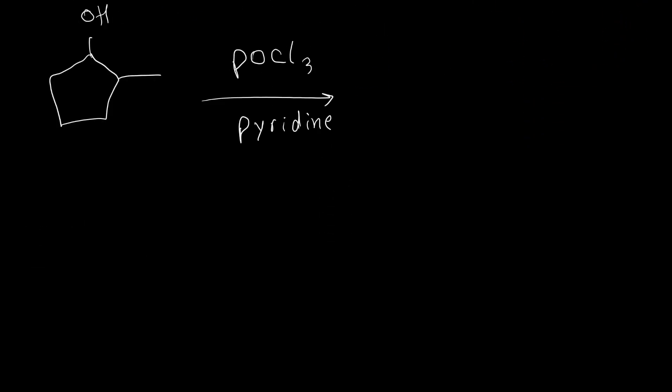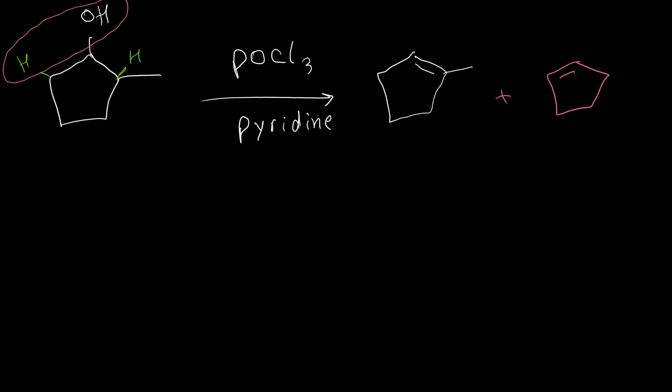Here is the first example. We have phosphorus oxychloride in pyridine. We have hydrogen on the right and left side, so the only possible products are two alkenes. If we take hydrogen from the right side, we have one alkene. If we take hydrogen from the left side, we have another alkene. Regarding the Zaitsev rule, the more substituted alkene is our major product.